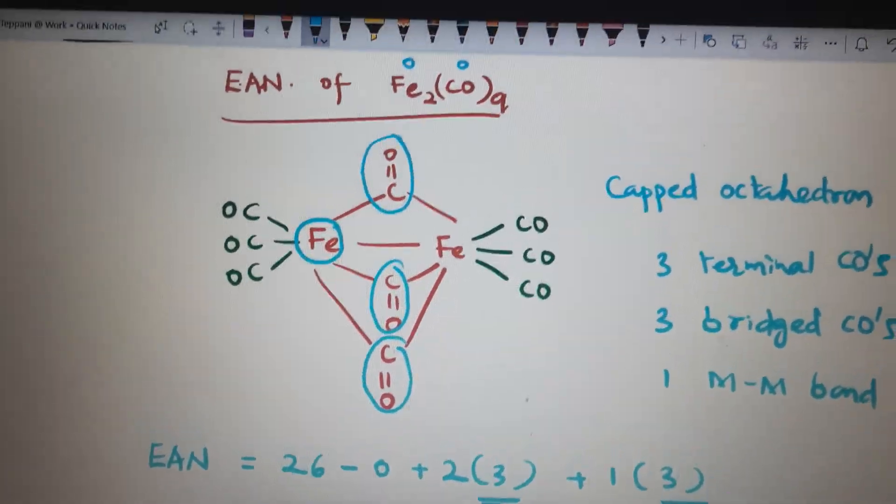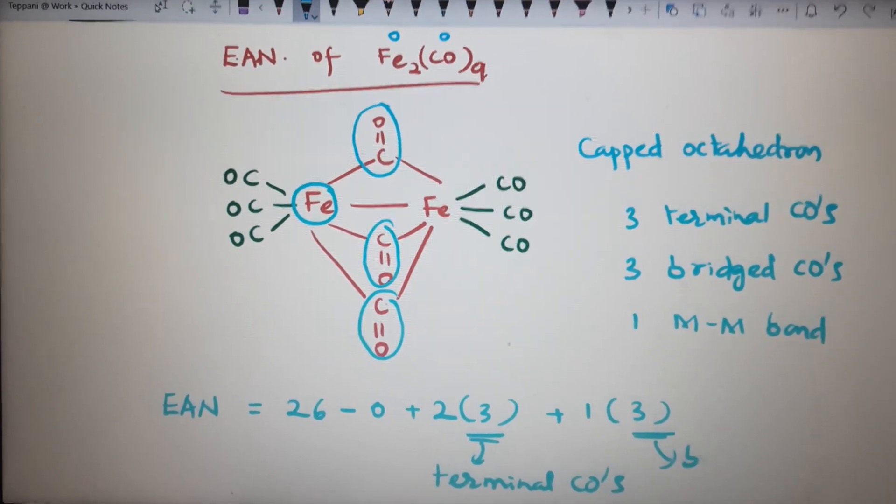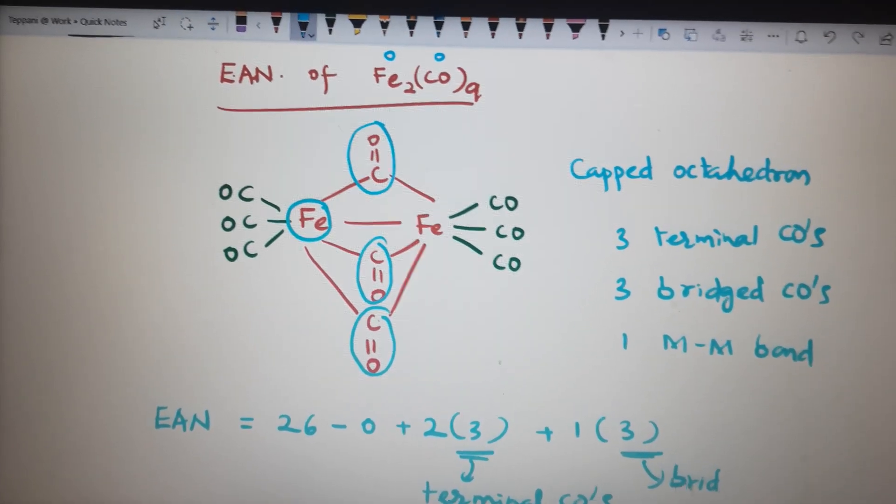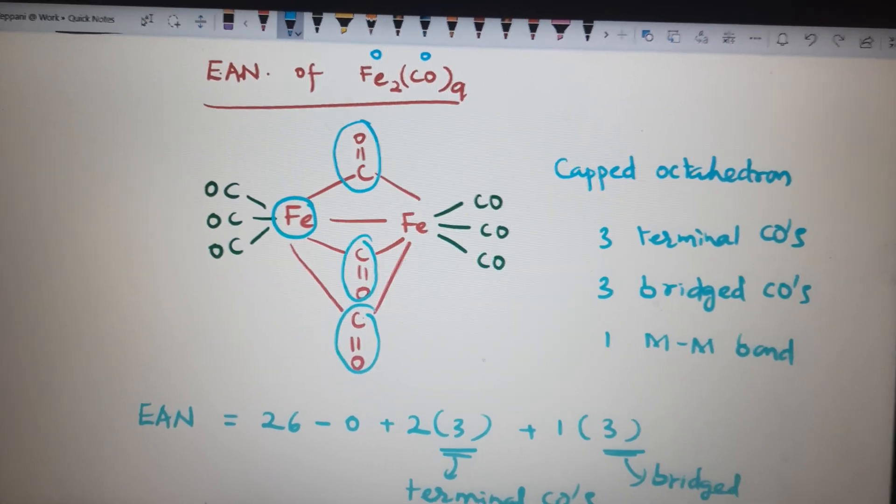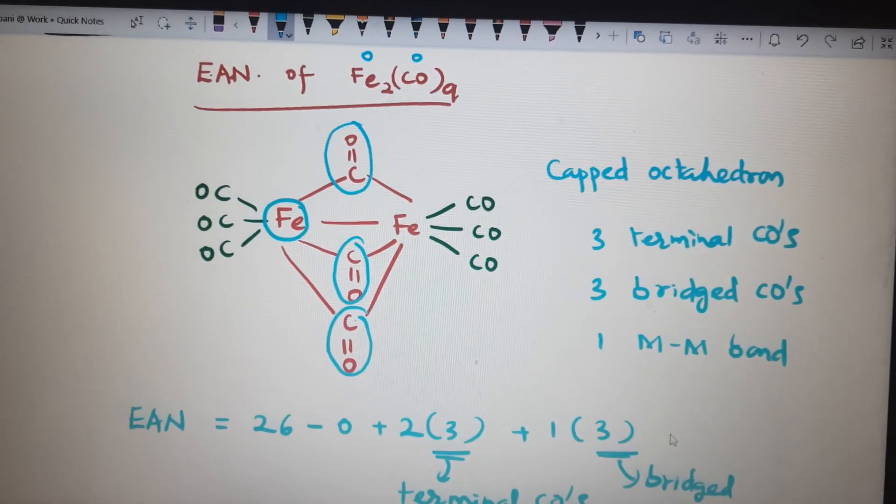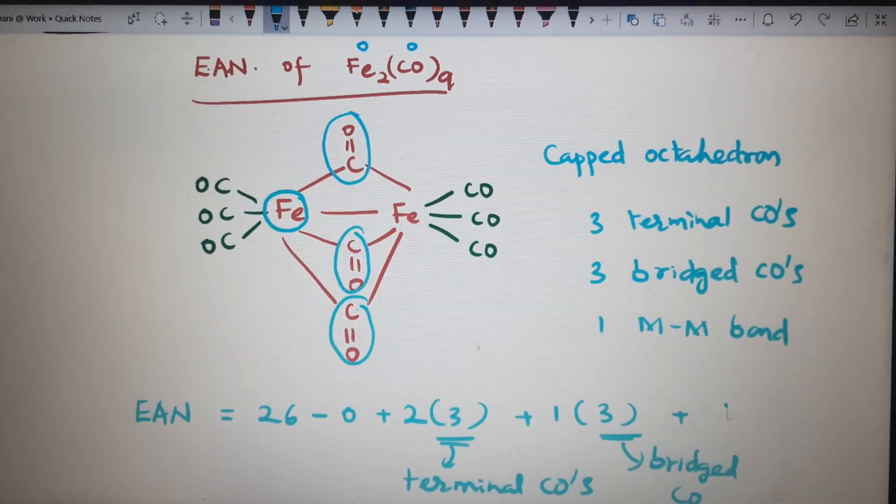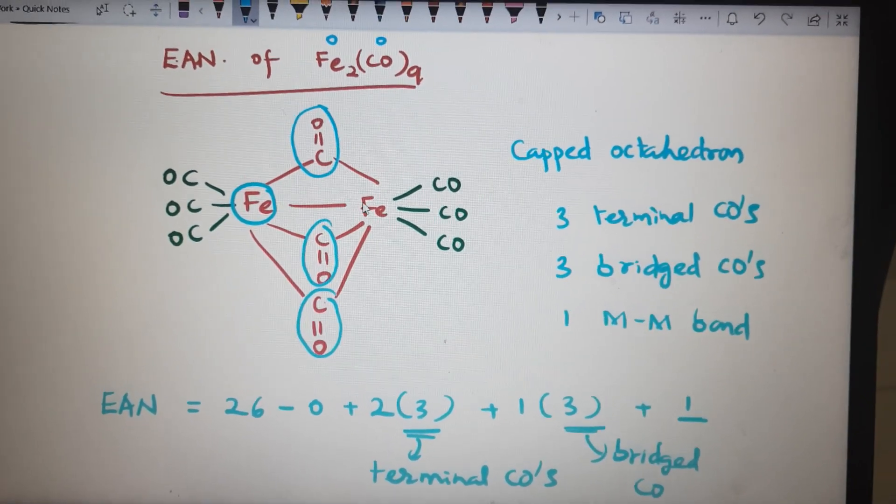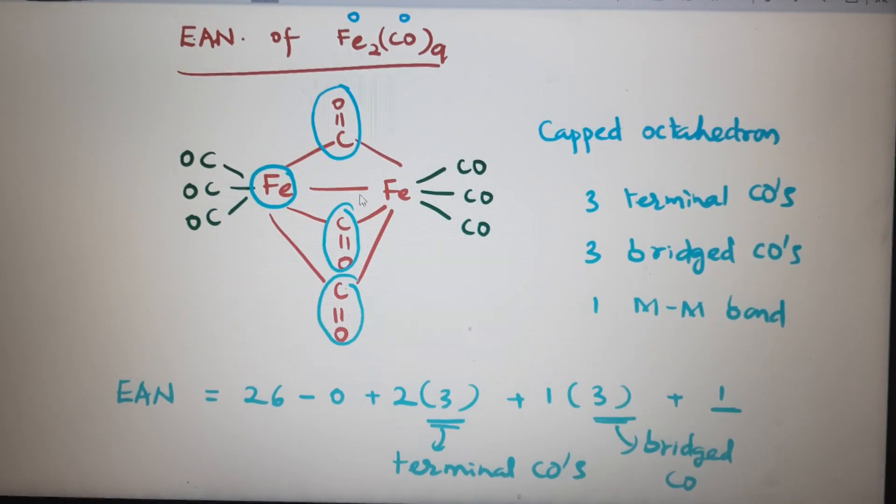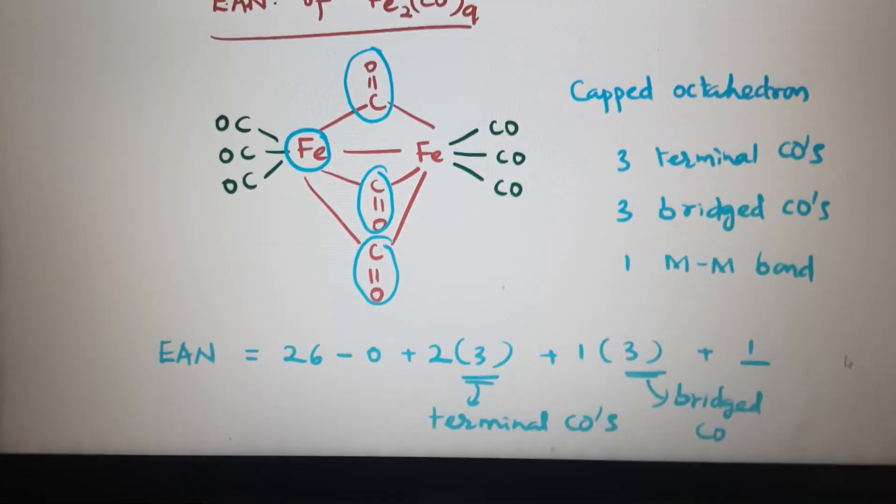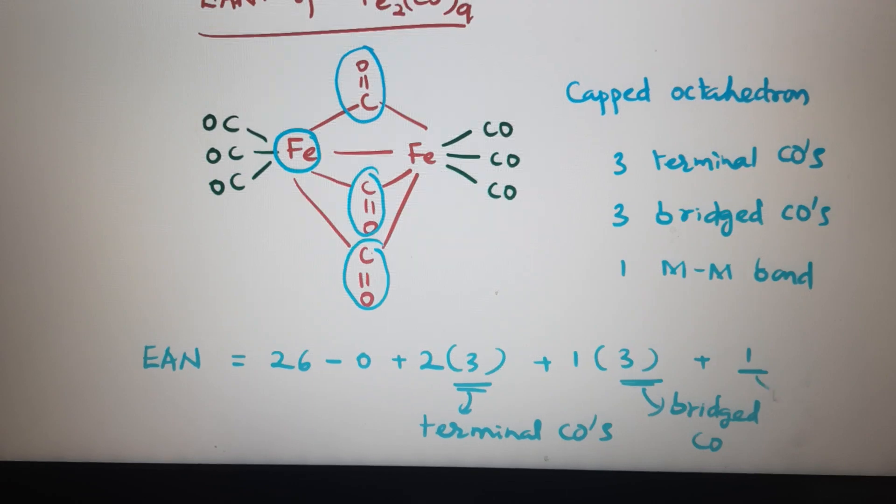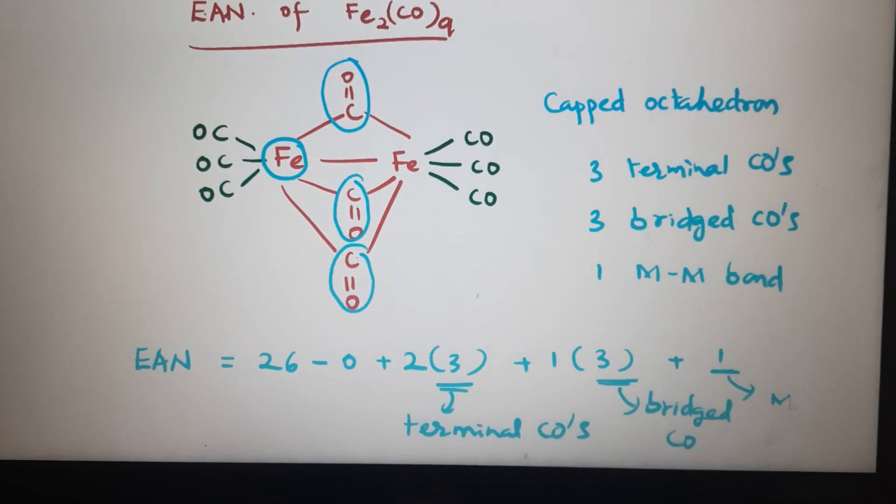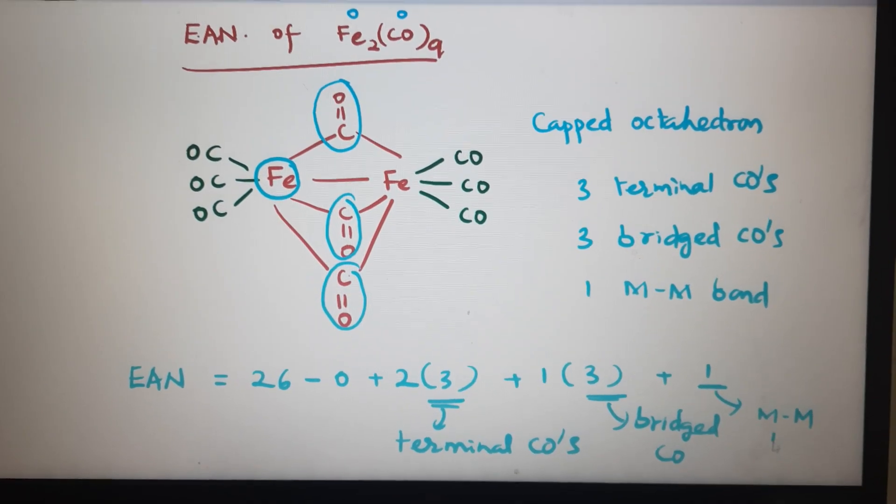So bridged CO giving one electron to each metal. Then there is one electron coming from metal-metal bond. Two electrons there in the metal-metal bond, so each one getting one electron extra. So that this is from metal-metal bond or iron-iron bond.